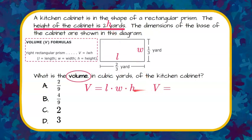So let's put everything we know. L, the length, is two-thirds. W, the width, is one-third. And the height is given in the problem as two.